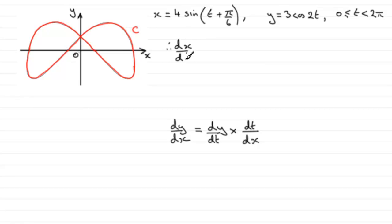To differentiate x with respect to t, we use the chain rule. So we do the differential of 4sin of the bracket. 4sin of anything will go to 4cos of that bracket, t plus pi upon 6.